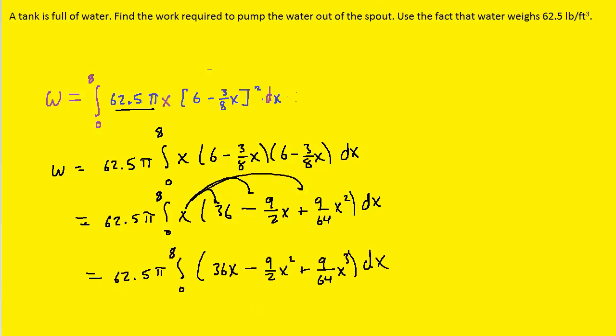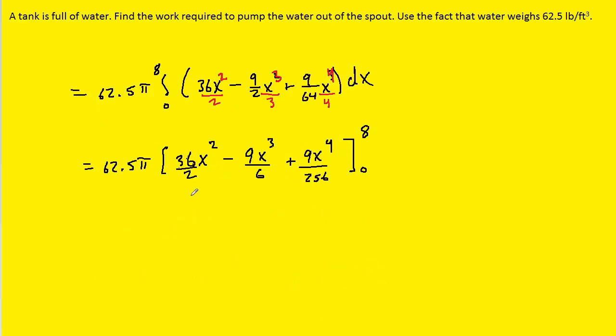And we are now ready to actually integrate. So we recall that when we do that, we're going to be adding 1 to the powers, and then dividing by whatever that new exponent becomes. So for example, when we start here with X to the 1, we're going to end up with X to the 2, and then we're going to divide that by 2. Here we're going to have X to the 3, and divide that by 3. And then here we're going to have X to the 4, and divide that by 4. Note that when you divide, you're going to actually be multiplying these denominators. So this 2 times 3, and this 64 times 4. And we can simplify a little bit. 36 divided by 2 is 18. 9 over 6 is going to become 3 over 2.